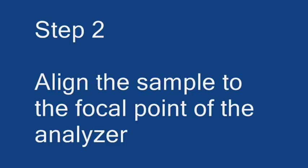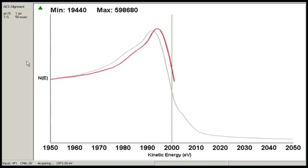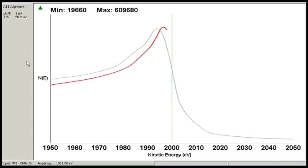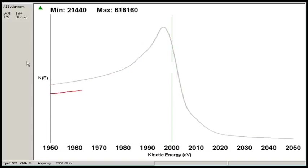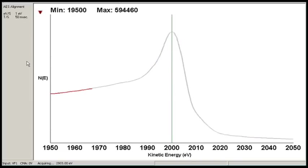Now that we have the sample loaded, we're going to line it to the focal point of the analyzer. In this case, we're using a Phi 15110 CMA. It has a spot size of about 5 microns, which means we won't get very good images, but it will work well enough for the purpose of this video. We position the sample until the crossover of the elastic peak occurs at 2,000 volts. That's now the correct focal point of the CMA.